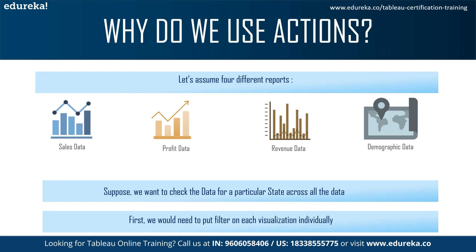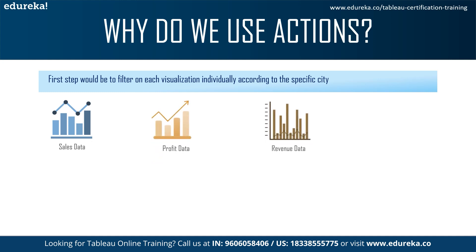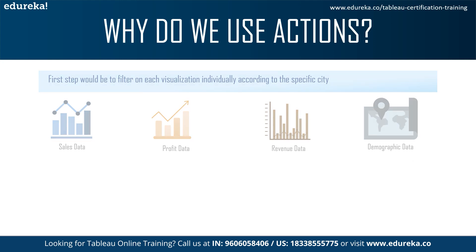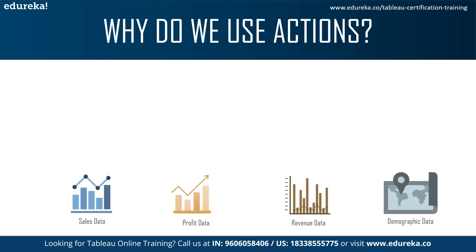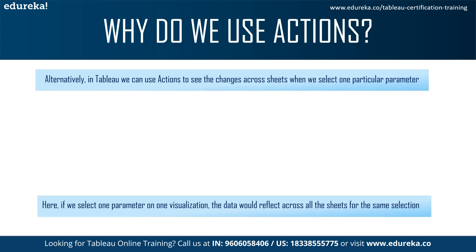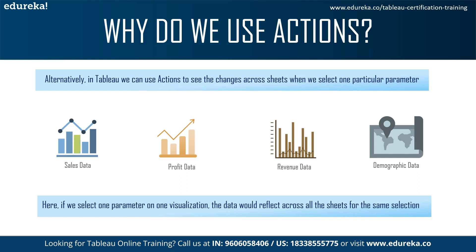If we want to see changes in visualization for a particular parameter — say a specific state or region — without actions, we'd have to individually filter each visualization: sales data, profit data, revenue data, and demographic data. But with actions in Tableau, we can see changes across all visualizations for a selected parameter at once. Once we select a specific state in sales data, it highlights the relevant data in all chosen visualizations.